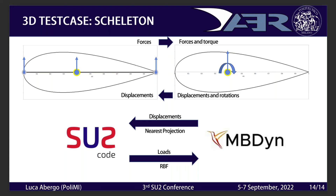Coming from the fluid side, we have forces on the three nodes, but only the center one is part of the structural model, so we translate the three forces into three forces and three couples. In the other direction, we obtain three displacements and three rotations from the structural model and translate them into displacements for all nodes of the skeleton. The technique used to pass data from SU2 to MBDyn is RBF with local support, while from MBDyn to SU2 we use nearest projection. Nearest projection works better than RBF in this case, but it requires grid connectivity, and we don't want to pass the fluid grid connectivity since it is too computationally expensive. Thank you for your attention.